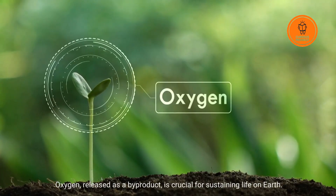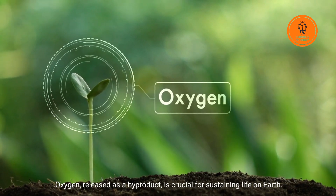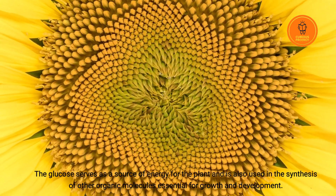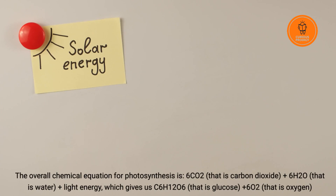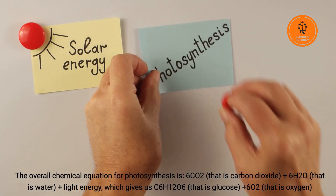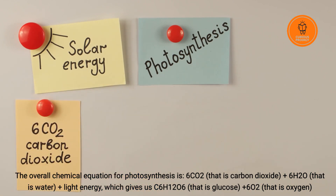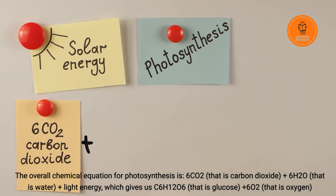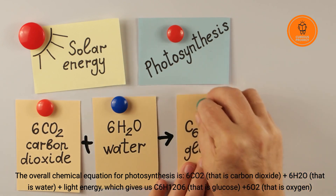Oxygen released as a byproduct is crucial for sustaining life on Earth. The glucose serves as a source of energy for the plant and is also used in the synthesis of other organic molecules essential for growth and development. The overall chemical equation for photosynthesis is: 6CO2 plus 6H2O plus light energy gives C6H12O6 plus 6O2.